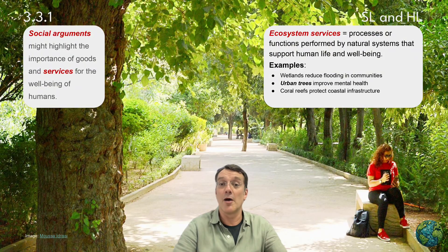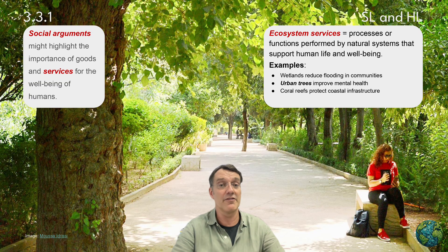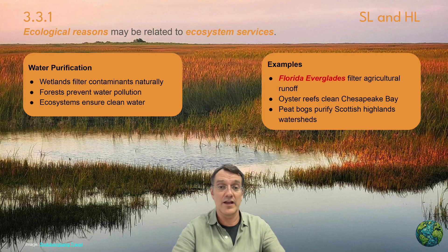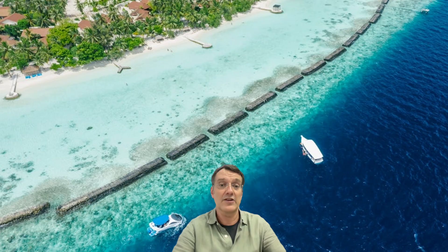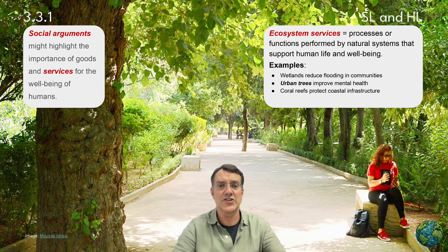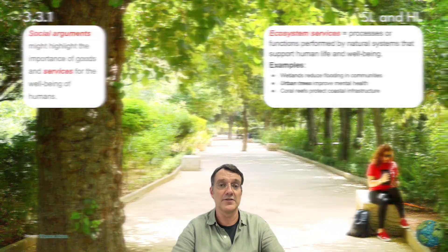Ecosystem services encompass processes or functions performed by natural systems that support human life and well-being. Wetlands reduce flooding in communities, urban trees improve mental health, and coral reefs protect coastal infrastructure. These services aren't harvested directly, but they provide essential background functions that human communities depend on.